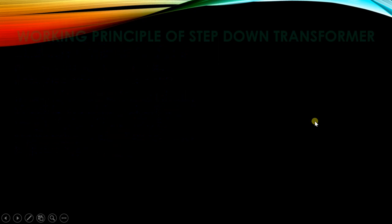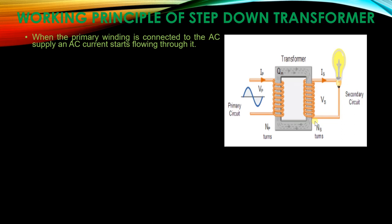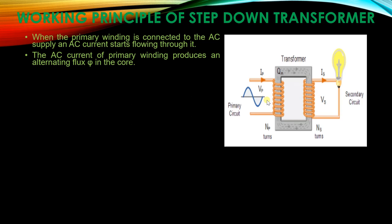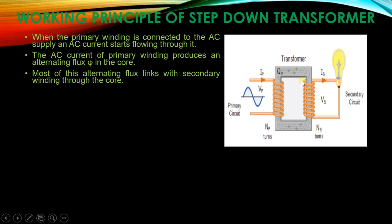Now discussing the detailed working principle: when the primary winding is connected to the AC supply, AC current starts flowing through it. As shown in the figure, AC current starts flowing on the primary side. The AC current of the primary winding produces an alternating flux phi in the core. Most of this alternating flux links with the secondary winding through the core.